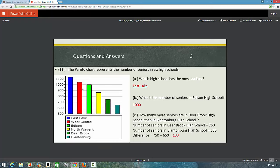And we did this in Model 2 homework study guide. Pareto chart. When you have the Pareto chart, you see how the bars are decreasing. The bars are in decreasing order. Which high school has the most seniors? You see it is the blue one. Eastlake. Eastlake High School.